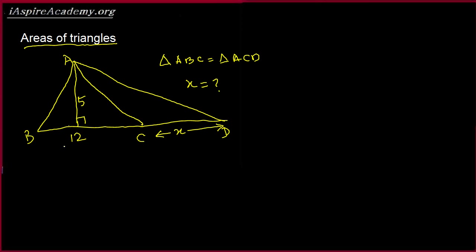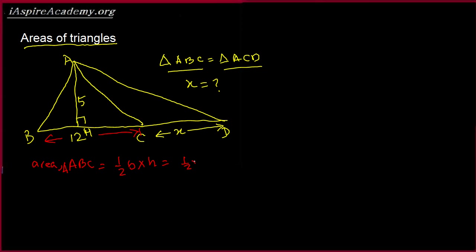To solve this problem, we have to apply the fact that the areas are the same. So what is the area of triangle ABC? It's half base times height. Let me choose a different color. Area of ABC equals half base times height, which we learned in our first video. The base is 12 and the height is 5, so the area is half times 12 times 5, which is 30.